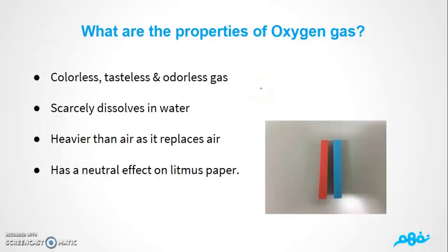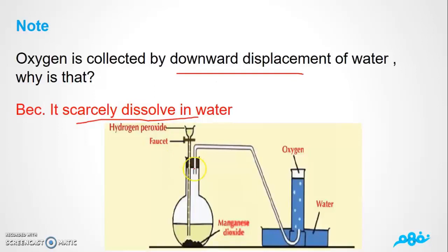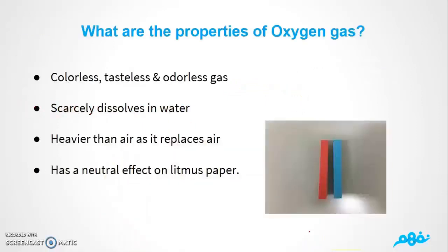Now we're going to talk about the properties of oxygen gas. Number one: oxygen gas is colorless, tasteless, and odorless. Number two: it scarcely dissolves in water, which is why it is collected by downward displacement of water. Number three: oxygen gas is heavier than air and replaces air. Finally, it has a neutral effect on litmus paper — it does not turn red to blue or blue to red.